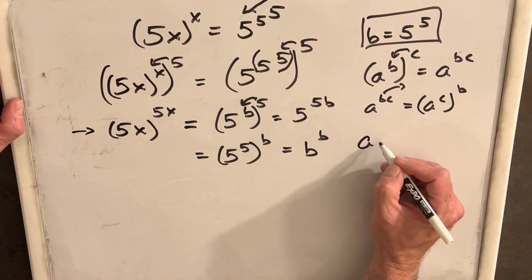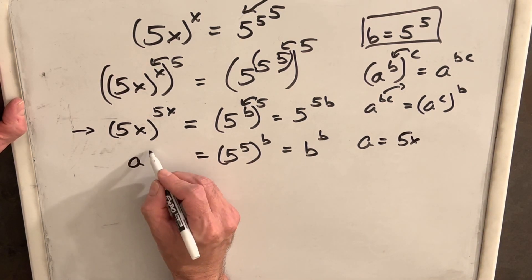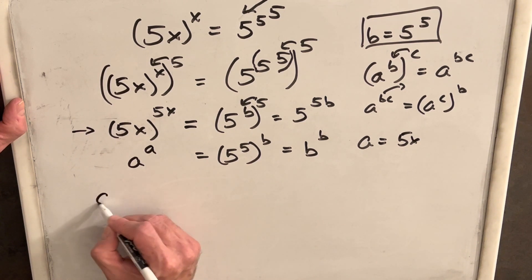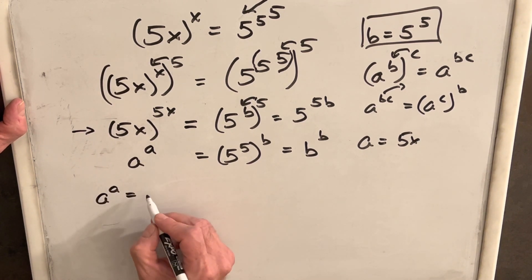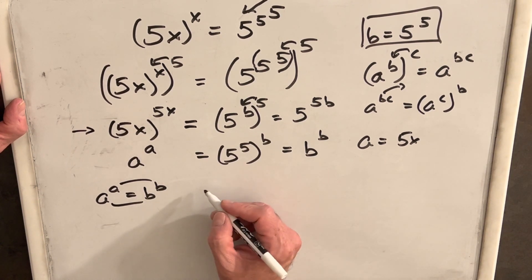If we call a 5x, this side is going to be a to the a. So we set up the a to the a, b to the b scenario that we wanted. So then we're equating, we're just saying at this point that a equals b.